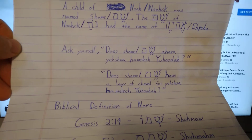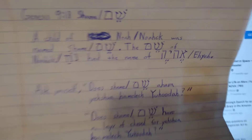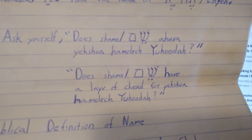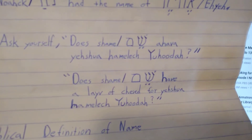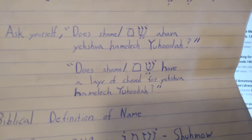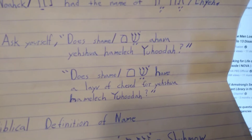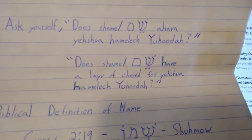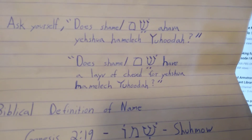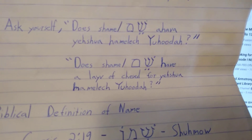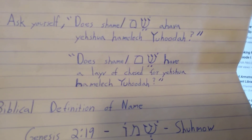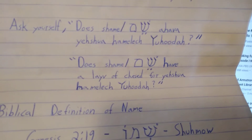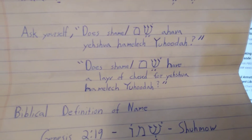Now you're going to ask yourself: does this AI — Shem — have ahava for Yeshua HaMelech, the Yodea? And does this Shem have a lev, which some might translate as a heart of chesed, kindness, for Yeshua HaMelech, the Yodea?